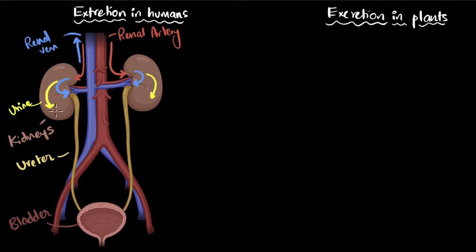What happens to the urine? The urine that is formed goes through the ureter, comes down into the bladder, and sits there until you're ready to expel it.